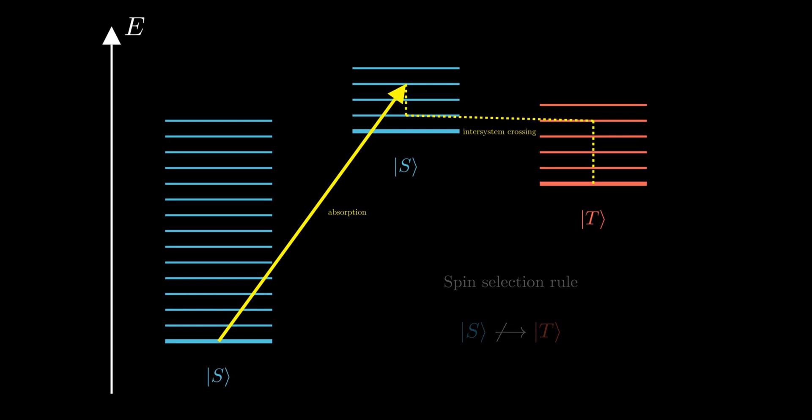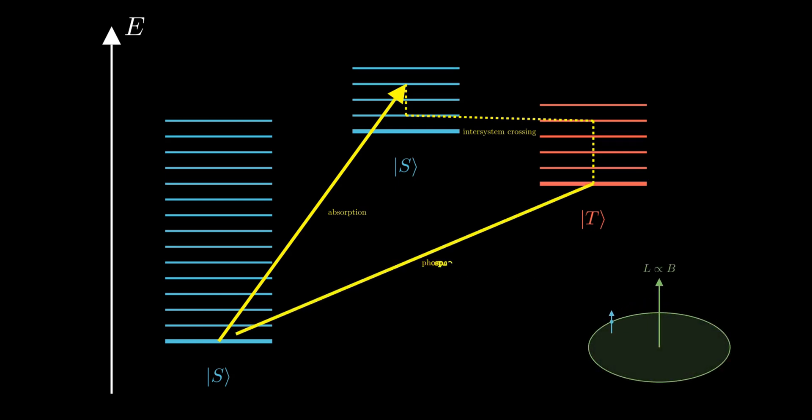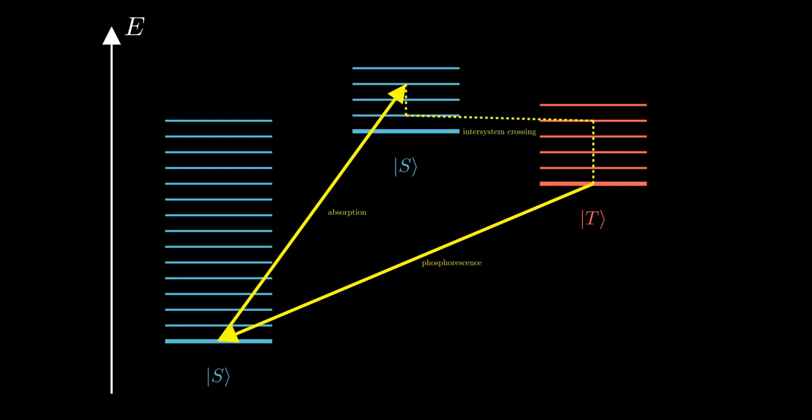However, spin-orbit coupling weakly relaxes the rule, allowing the transition to occur slowly, resulting in the emission of light over an extended period. Thanks for watching.